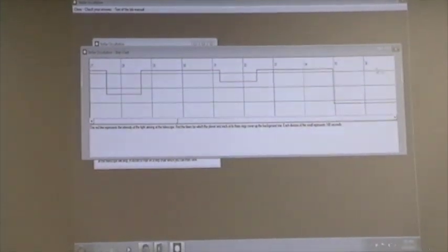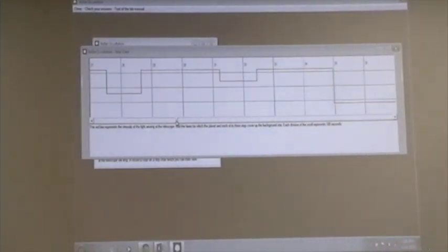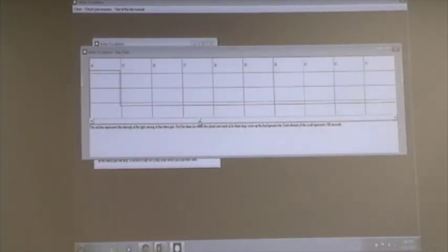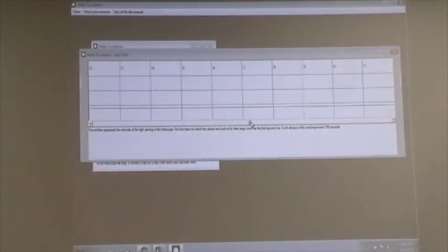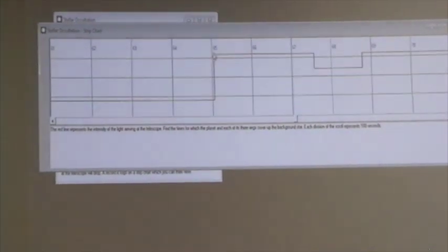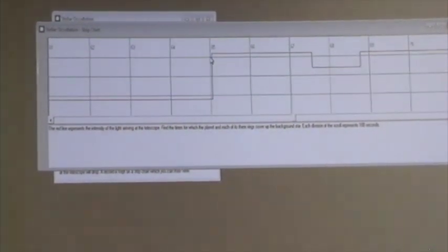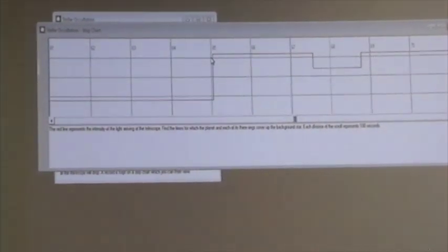And then finally, when we hit about 35 seconds on my particular strip chart, the light begins to dim and stays dim for a very, very long time. This would represent the time when the planet is blocking the light from the star.